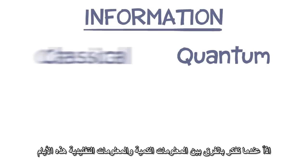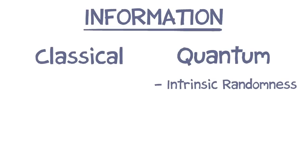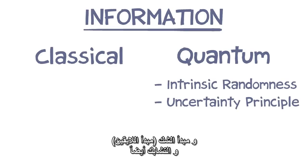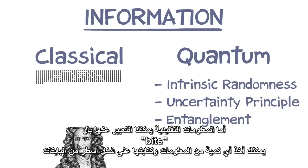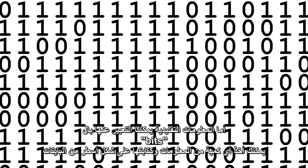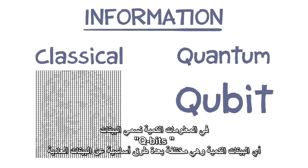When we think about how quantum information is different from classical information nowadays, we're thinking about this intrinsic randomness, the uncertainty principle, and also about entanglement. Classical information we can express in terms of bits. You can take any amount of information and just write it as a string of bits. And in the quantum case, we call them quantum bits or qubits. And they're different from ordinary bits in some fundamental ways.